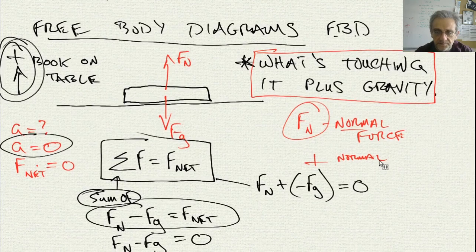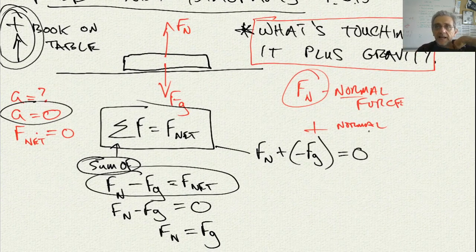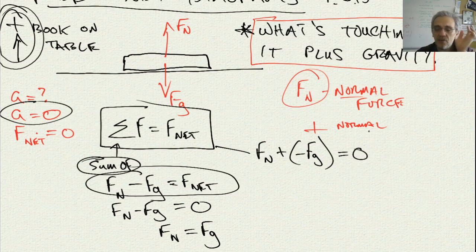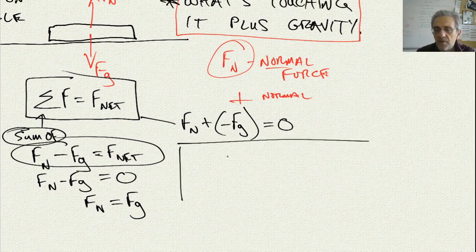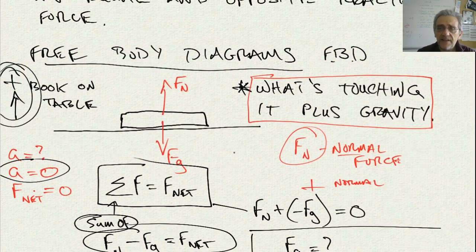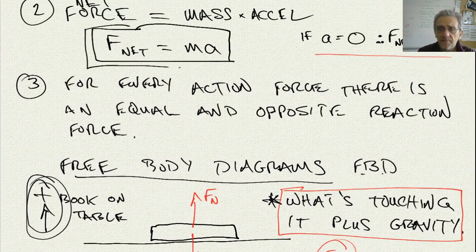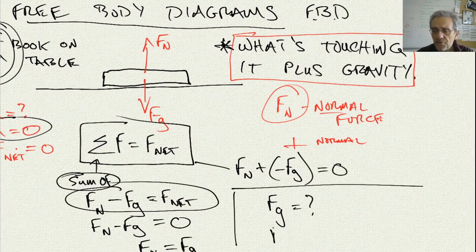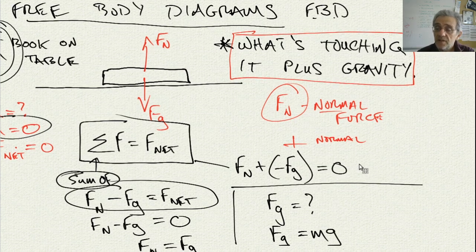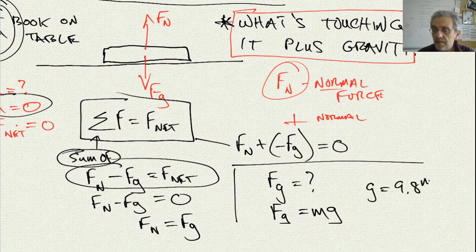That's fundamental to understanding how to draw free body diagrams. Now, what is the force of gravity? F_g equals what? F_g is a force, and from the second law, force equals mass times acceleration. That means the force of gravity equals the mass of the object multiplied by the acceleration of gravity, which is g, where g equals 9.8 meters per second squared.